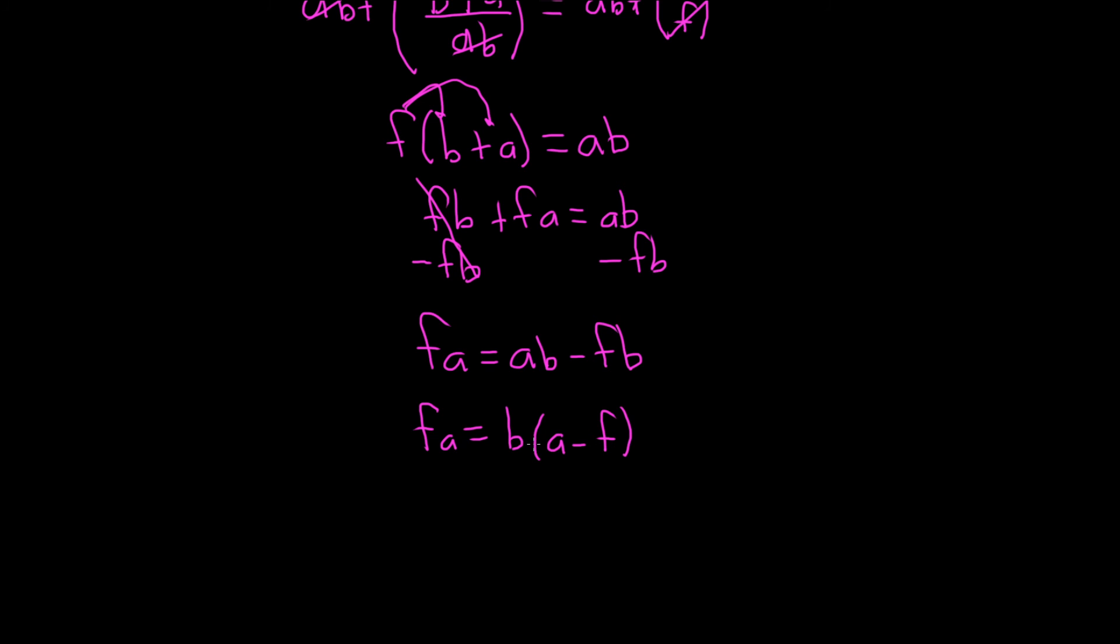So since it's being multiplied by b, we can solve for b by dividing by a minus f. So a minus f over a minus f. So these cancel. So we have fa over a minus f. Good stuff. And that's equal to b.